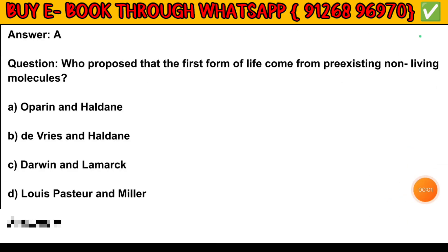Question number 12. Who proposed that the first form of life came from pre-existing non-living molecules? Option A — Oparin and Haldane. Option B — de Duve and Haldane. Option C — Darwin and Lamarck. Option D — Louis Pasteur and Miller. The answer is Option A: Oparin and Haldane.